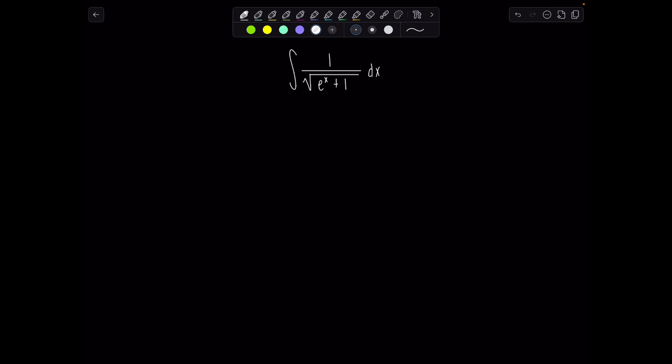All right, so what I did first was I made a u substitution, and I decided to let u be the entire denominator. So I let u be the square root of e to the x plus 1. And then before I go ahead and differentiate so I could find du, what I like to do is square both sides. It makes the whole process a lot easier. So u squared equals e to the x plus 1.